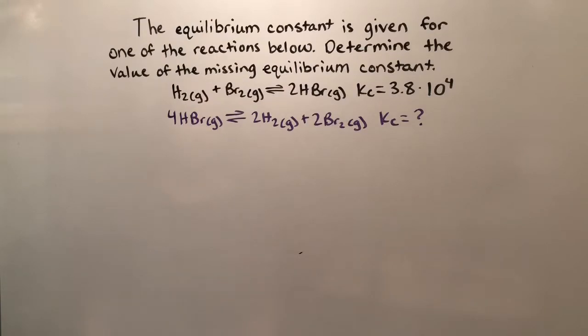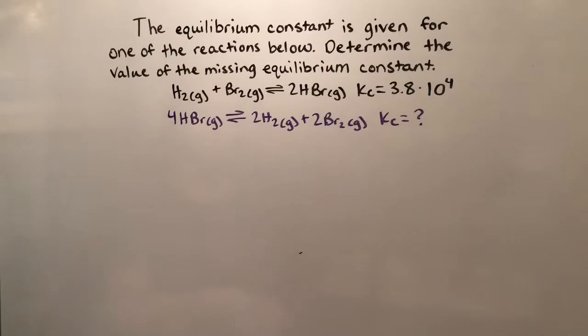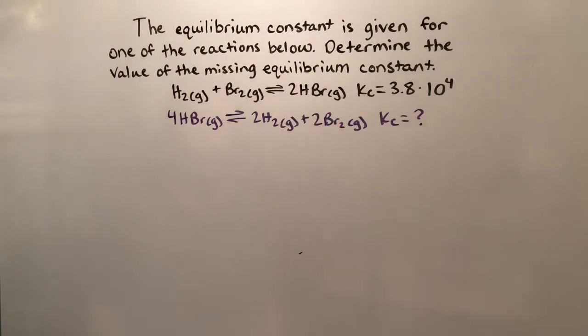The next rule is that if we flip the original equation, we're going to need to take one and divide it by our Kc value. So we're basically taking the inverse of our original Kc value to find our final Kc value.